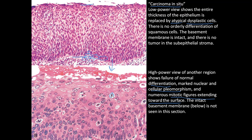These are mitotic cells close to the surface of this epithelium — that is bizarre. The intact basement membrane below is visible in this section. Because the basement membrane is intact, this is classified as dysplasia rather than a neoplasm.